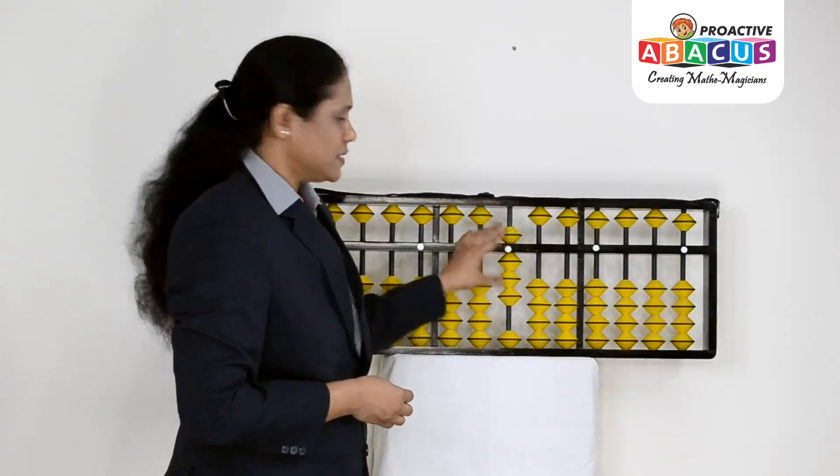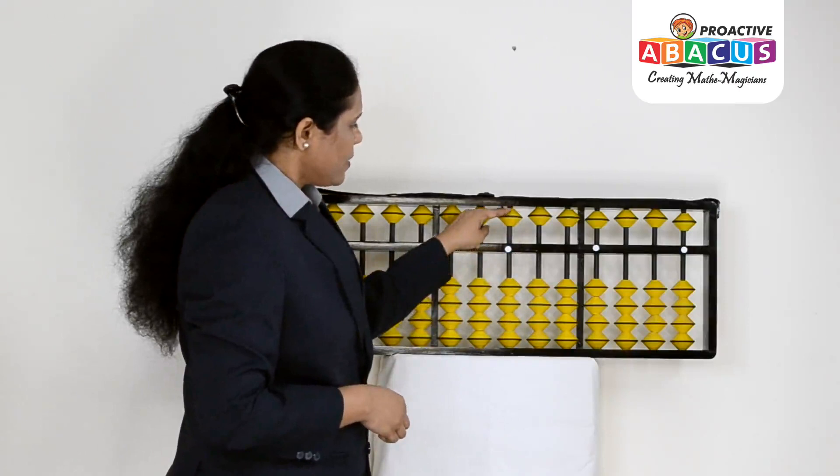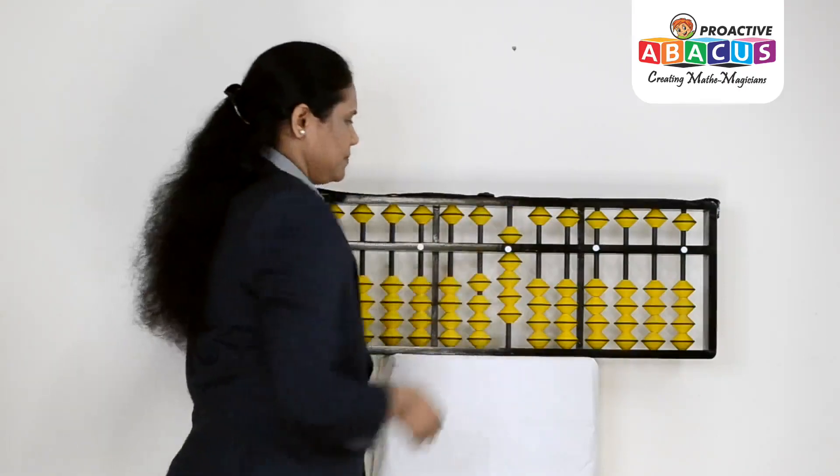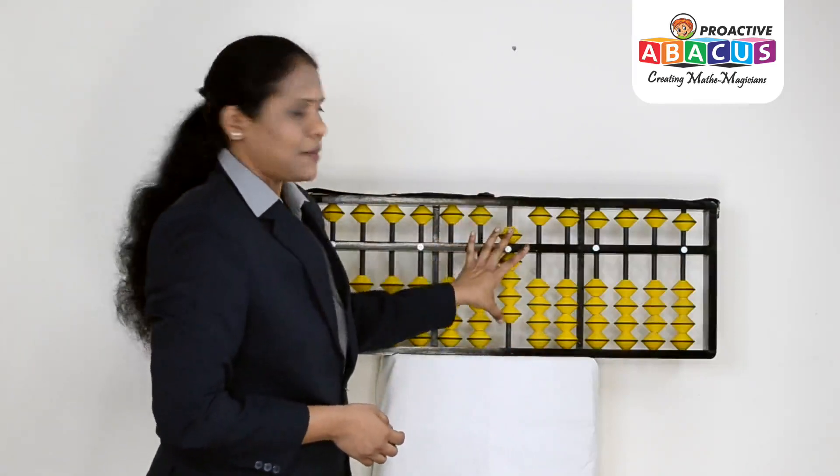For 8, we have upper deck 5 and lower deck 3 beads. For 9, we have upper deck 5 and lower deck 4 beads.